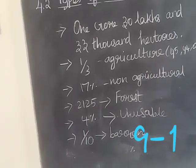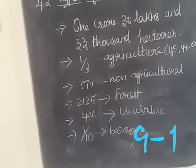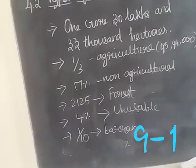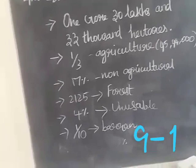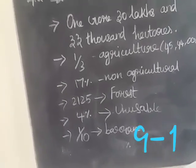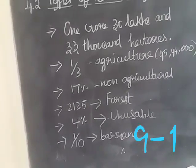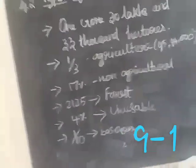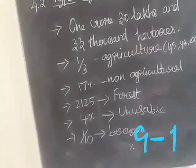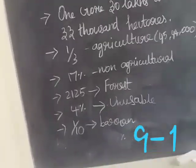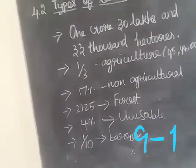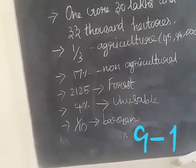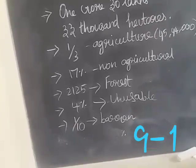The land used for forest is nearly the same as non-agricultural land, also around 17 percentage. Then four percentage of land is used for unusable purposes.